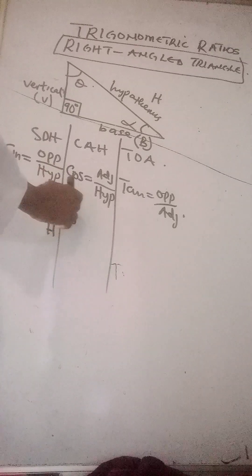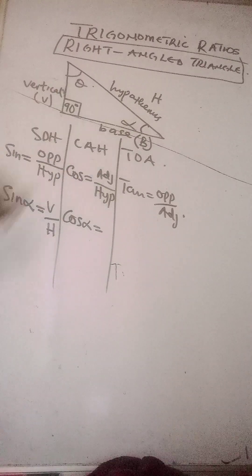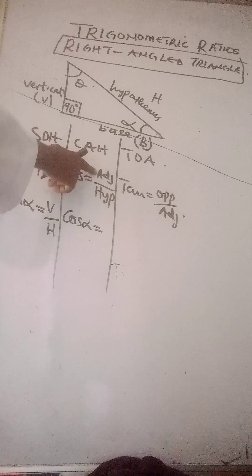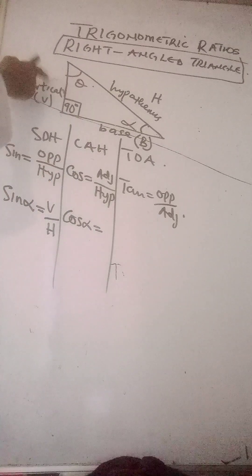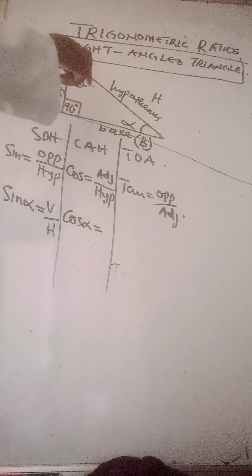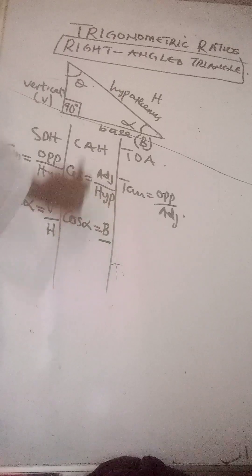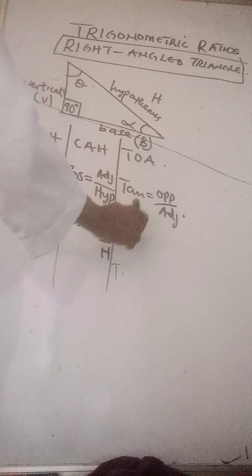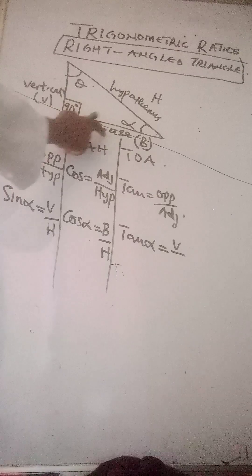Still using angle alpha: cosine alpha — the adjacent side is the base, since vertical is opposite to alpha. So cosine alpha equals B over H. And tangent alpha equals opposite over adjacent, which is V over B.